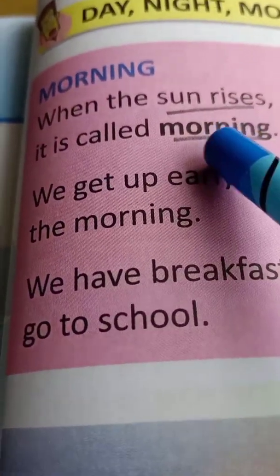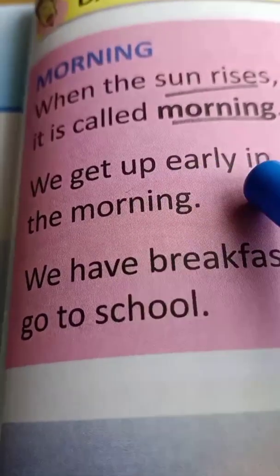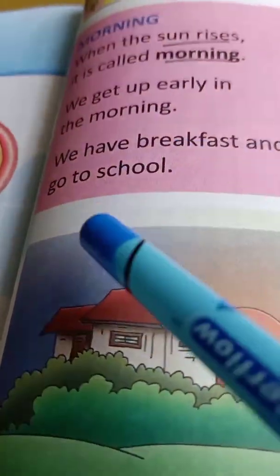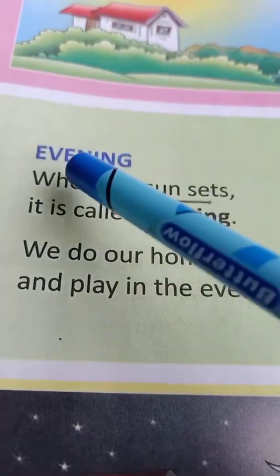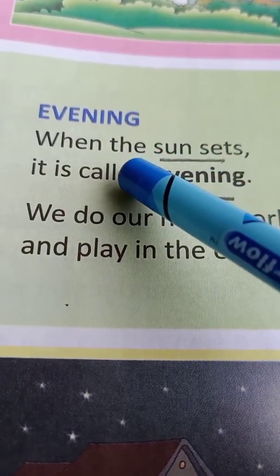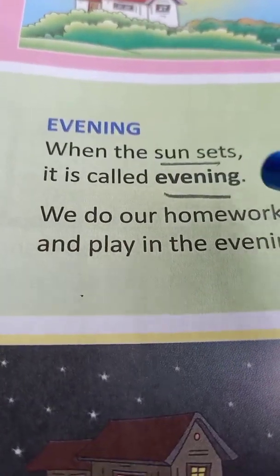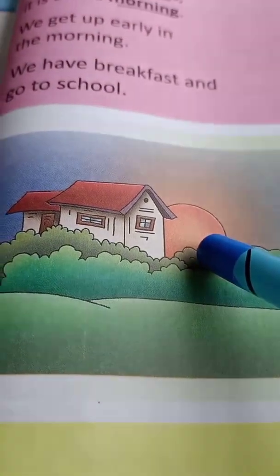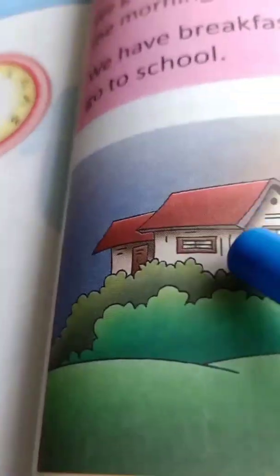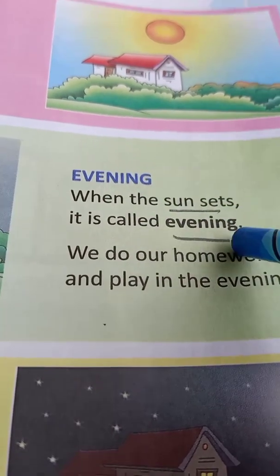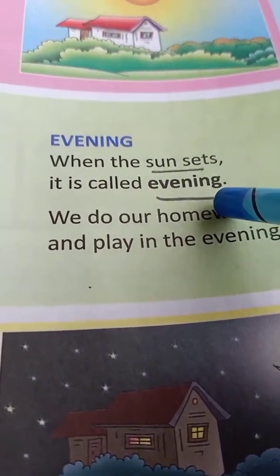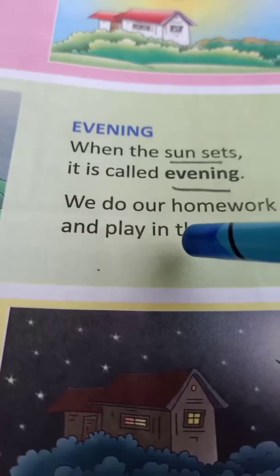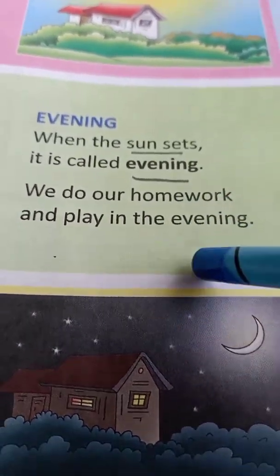When the sun rises, it is called morning. We get up early in the morning. We have our breakfast and go to school. Next is evening. When the sun sets — when the sun goes down — it is called evening. In this picture, the sun was up and here the sun is down. When the sun sets, that time is called evening.